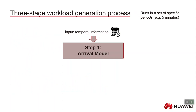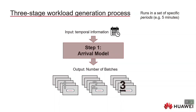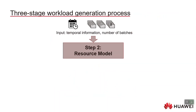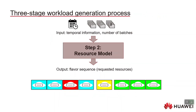Instead, we propose a three-stage workload generation process that runs in specific periods — for example, in one five-minute period you generate a mini trace. The input is the temporal information for that period, such as time of day and day of the week. The first step outputs the number of batches that will arrive during that period. We show in the paper that it's a much better fit to model the number of batches as arrivals under a Poisson distribution, rather than the number of VM arrivals. The second step uses this batch count and temporal information to generate the sequence of VM flavors.